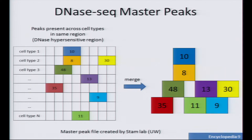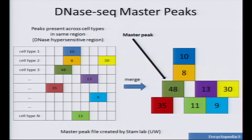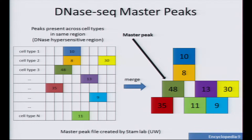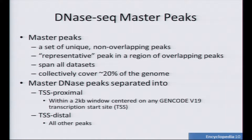So for instance, we have N different cell types and some have no peaks, but others have more or less overlapping DNase peaks. Instead of taking the entire pile as one region — what we call a DNase hypersensitive region — we're going to select something we call the master peak. That's the peak with the strongest signal. That peak will become the representative peak for that region, and we will discard the rest of the peaks in that area. The weak peaks shall not inherit the region.